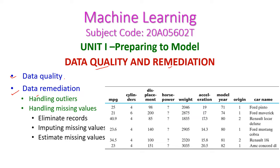When we come to data remediation, there are two types. First one is handling outliers, and second one is handling missing values. When we come to handling missing values, there are three types: first one is eliminate the record having missing values, second is imputing the missing values, and third is estimating the missing values. These are the topics we will see in today's class.